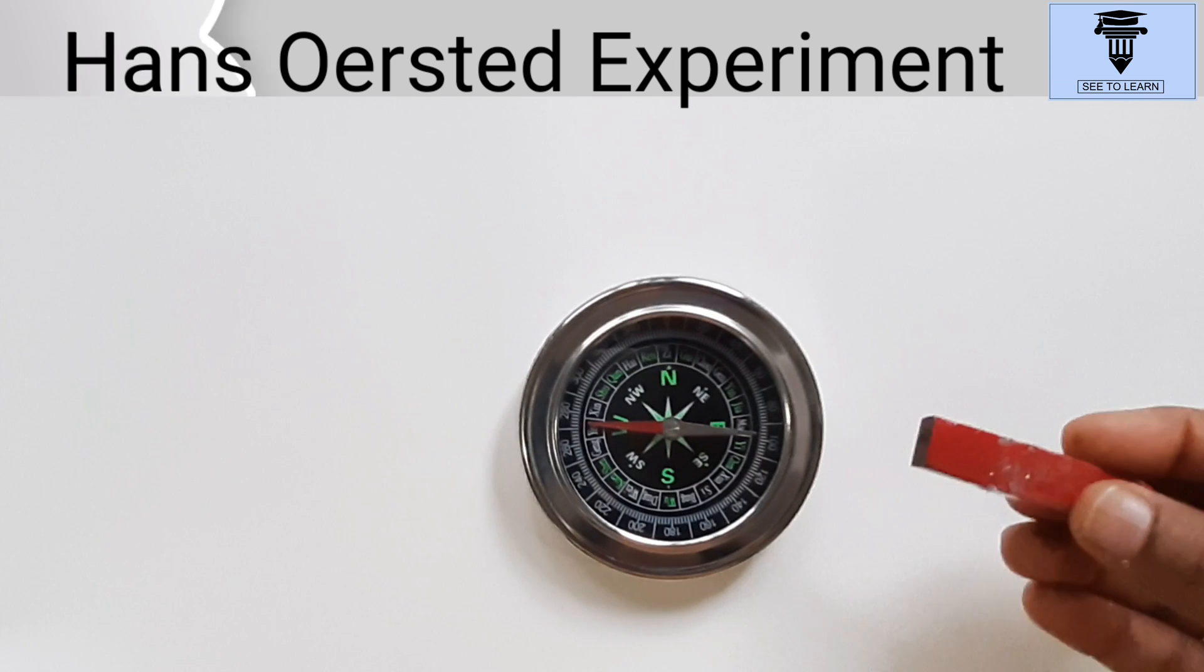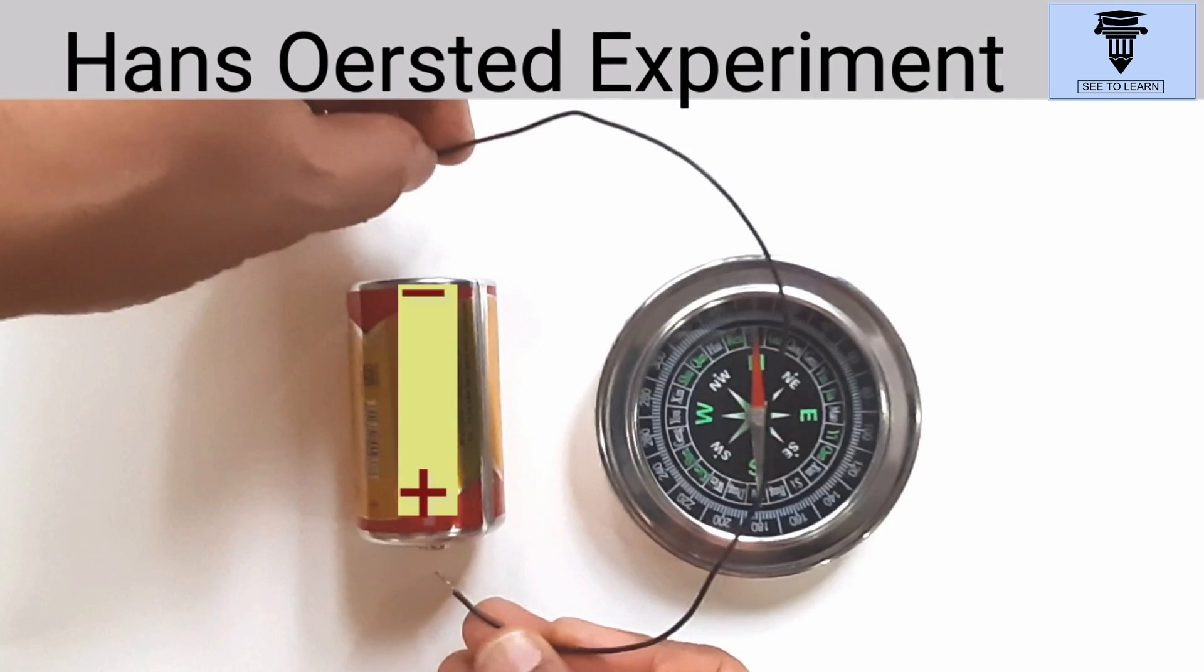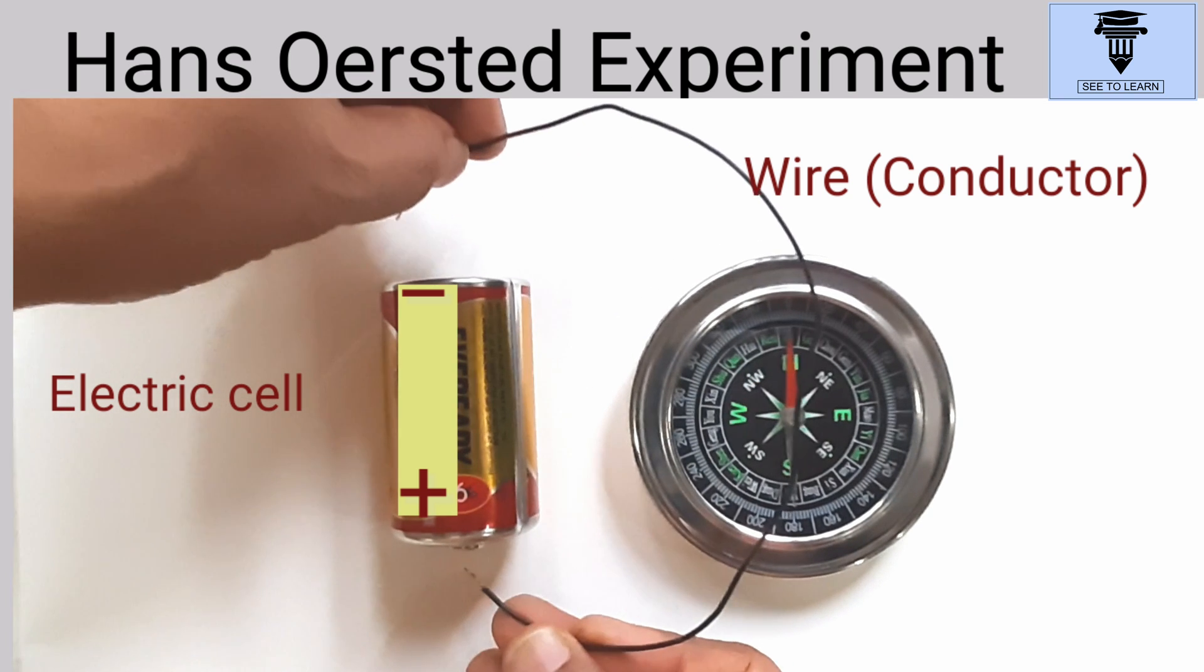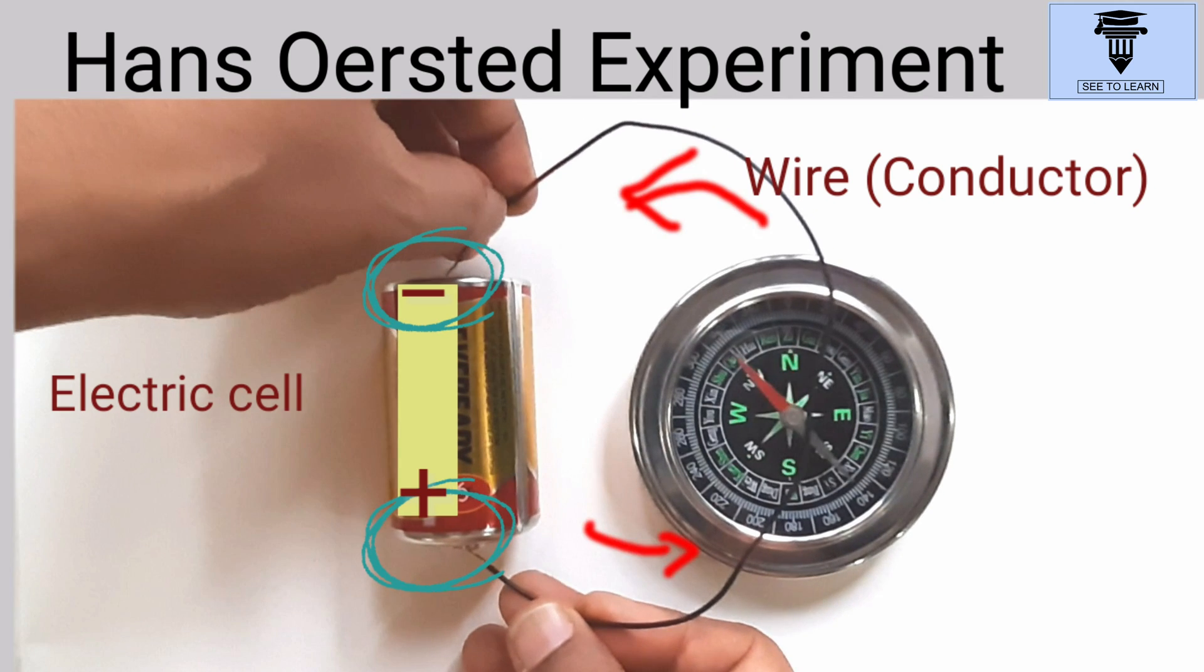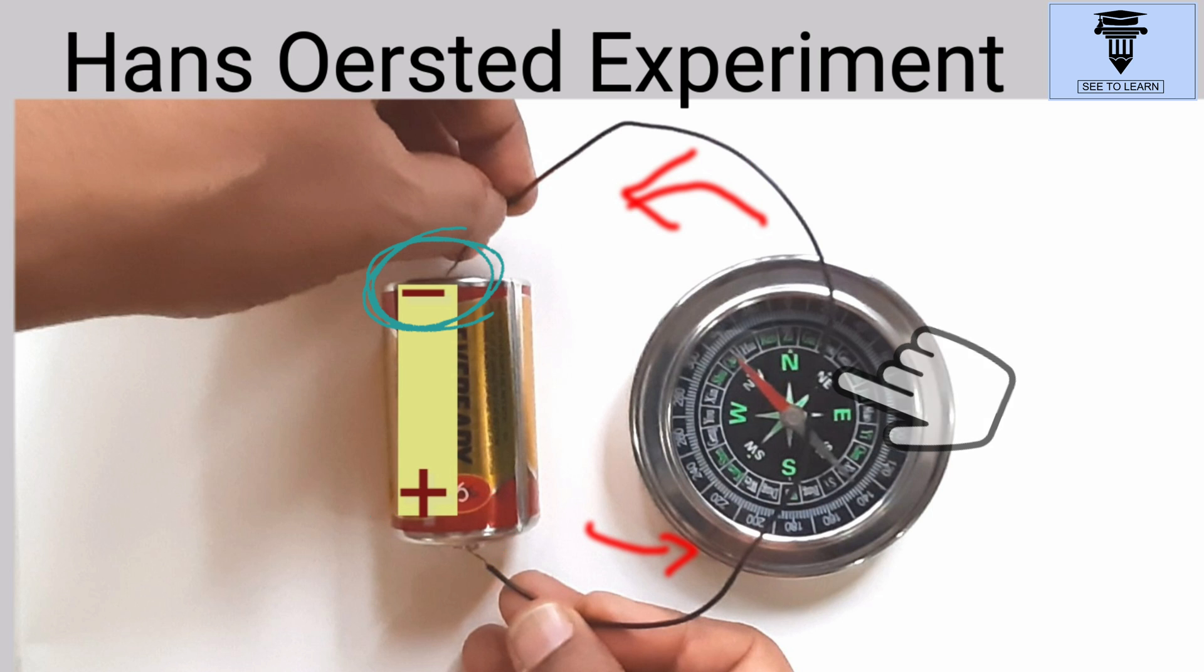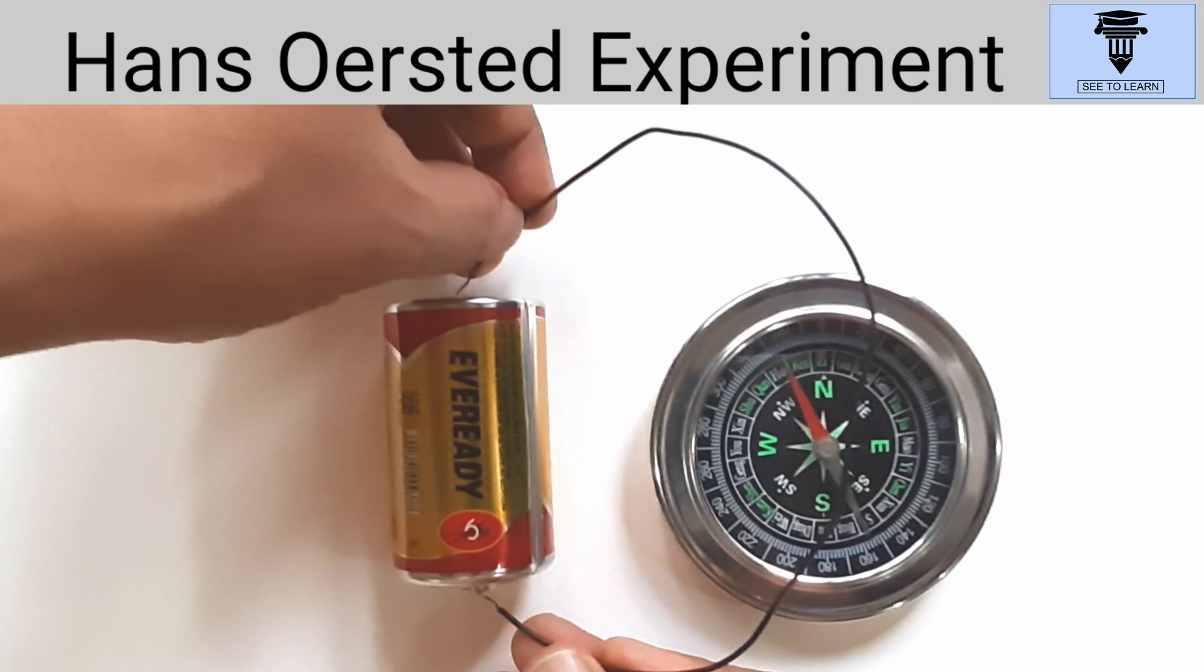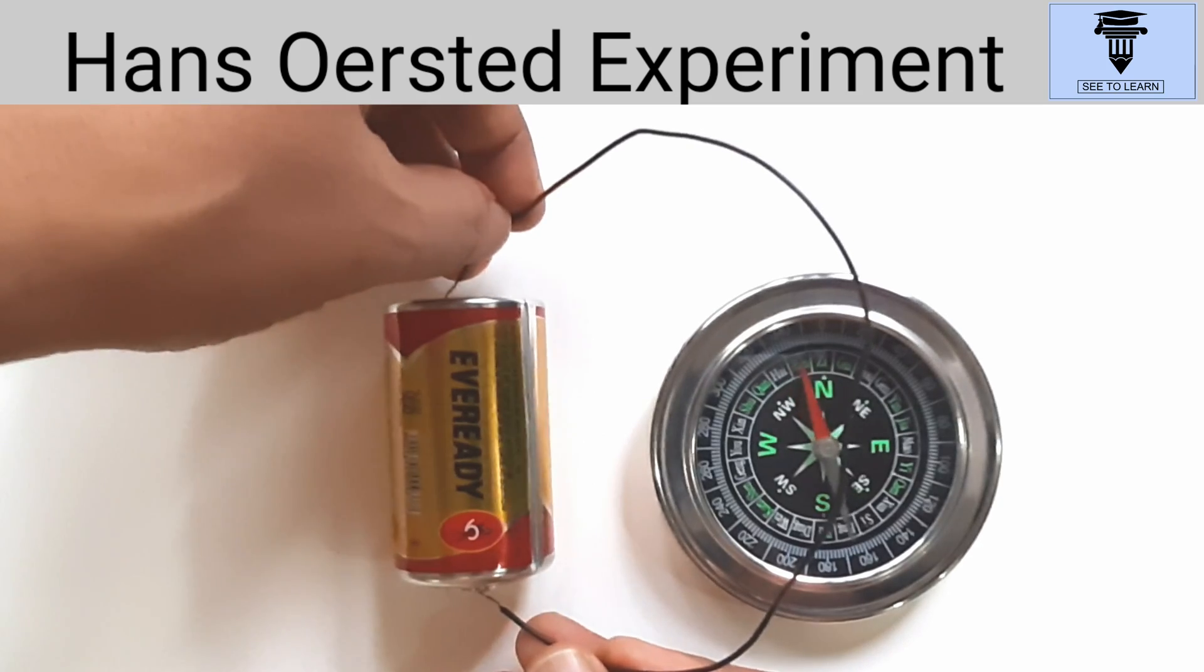On this note, let's do an activity. Here I take an electric cell and a wire. I connect the two ends of the wire to the two terminals of the cell, so an electric current flows through the wire. See, the needle of the compass under the wire deflects towards the west. The needle comes back to its original position when we stop the current.